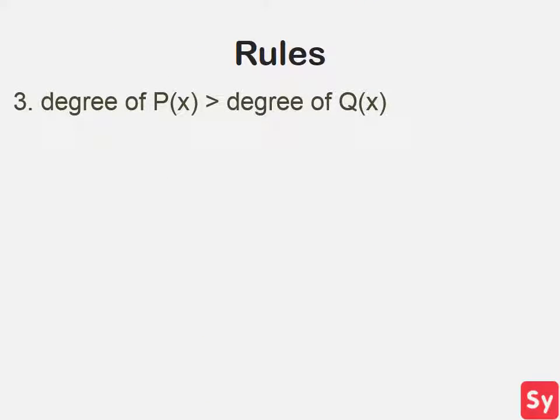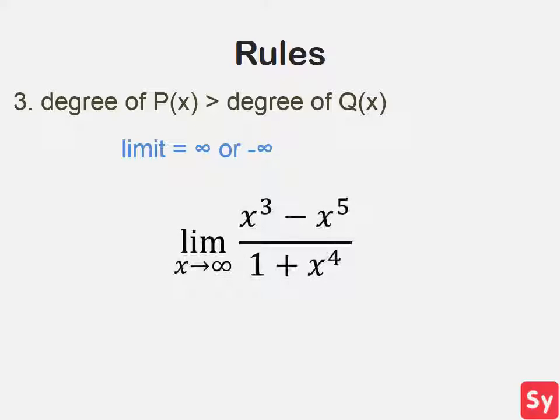And finally, rule three: if the degree of p(x) is greater than the degree of q(x), then the limit equals infinity or negative infinity, depending on if the power is even or odd or if x approaches infinity or negative infinity. Let's see an example. The limit as x approaches infinity of x cubed minus x to the fifth over one plus x to the fourth. We'll look at the largest exponent of the numerator and denominator. Five is the largest exponent of the numerator and four is the largest exponent of the denominator. That means the degree of p(x) is greater than the degree of q(x).